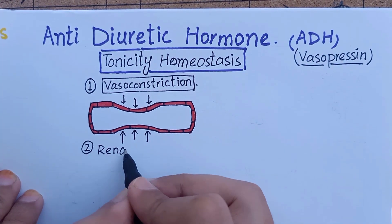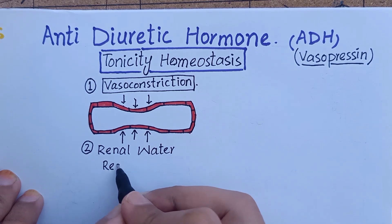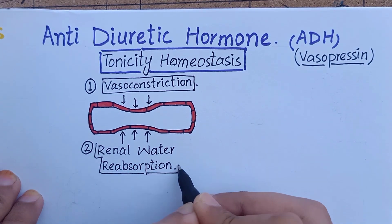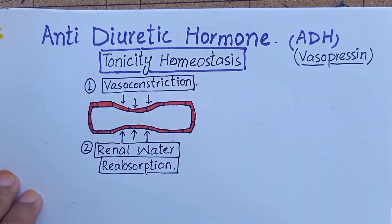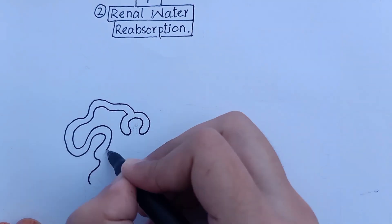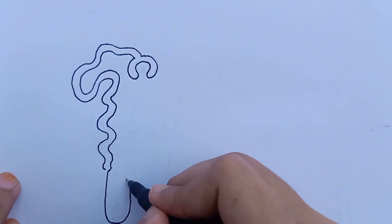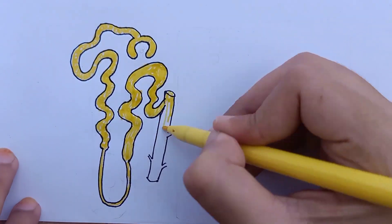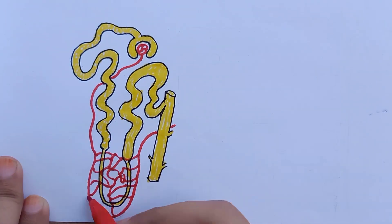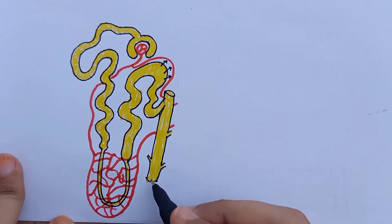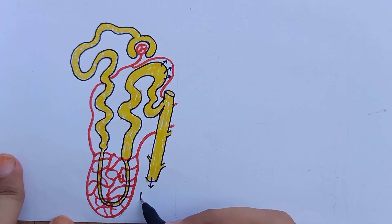The second major function of ADH, and our main focus, is that it greatly increases renal water reabsorption, especially from the distal convoluted tubule, collecting tubule, and collecting duct — from the tubule back into the blood. Therefore, it helps to conserve body fluid volume during the time of fluid loss or dehydration.